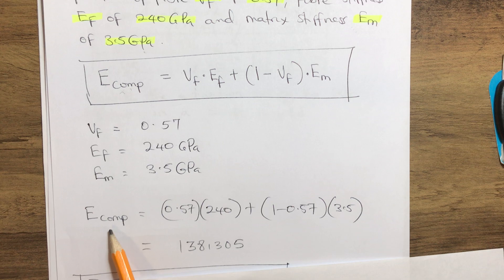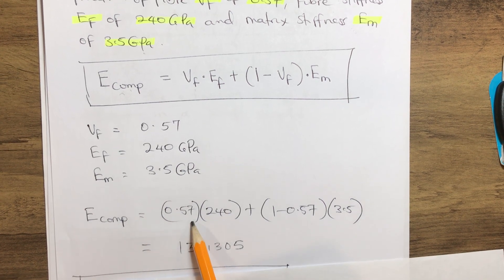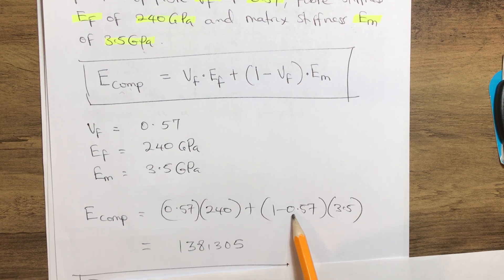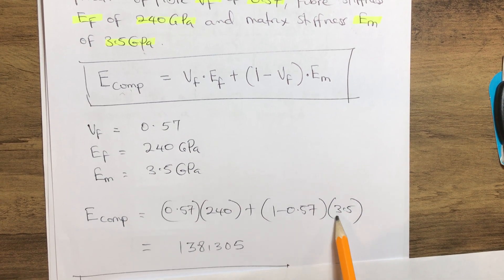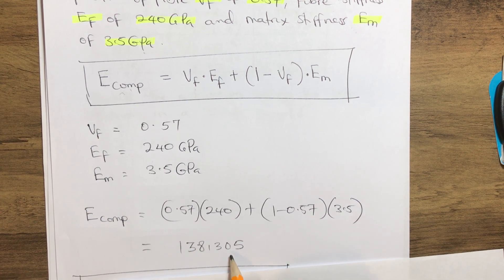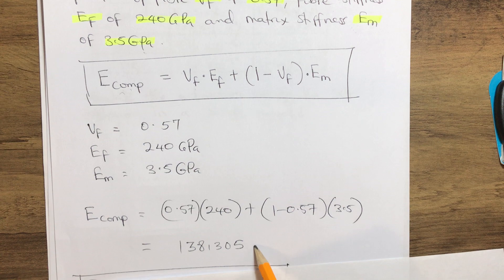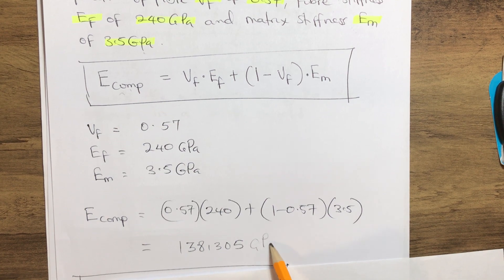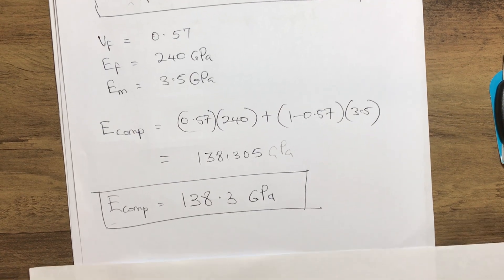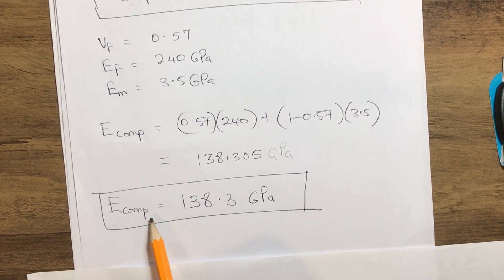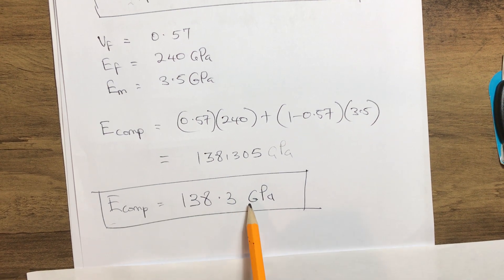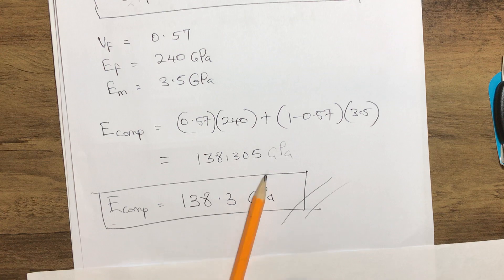The stiffness of the composite equals 0.57 multiplied by 240, plus (1 minus 0.57) multiplied by 3.5, which gives us 138.305 gigapascals. So the stiffness of our composite is 138.3 gigapascals. Thank you very much.